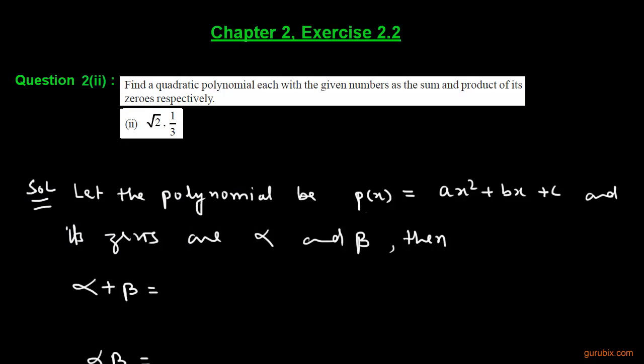Let us solve the second part of question 2 of exercise 2.2. In this question, we have to find a quadratic polynomial in which its sum of zeros and product of zeros is given to us.